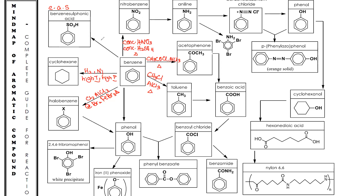For benzene sulfonic acid, you use fuming sulfuric acid, which is made of SO₃ in concentrated H₂SO₄, under reflux, to form benzene sulfonic acid. These five reactions — marked in red — are the five most basic reactions involving aromatic compounds, and all of them are electrophilic aromatic substitution reactions.